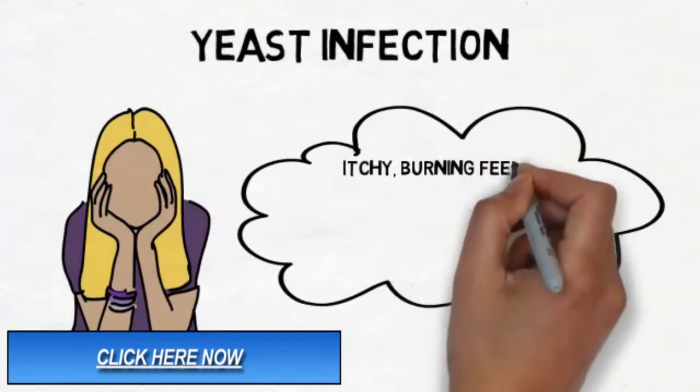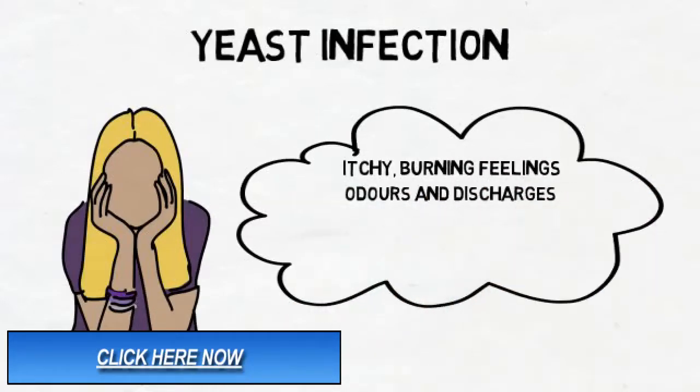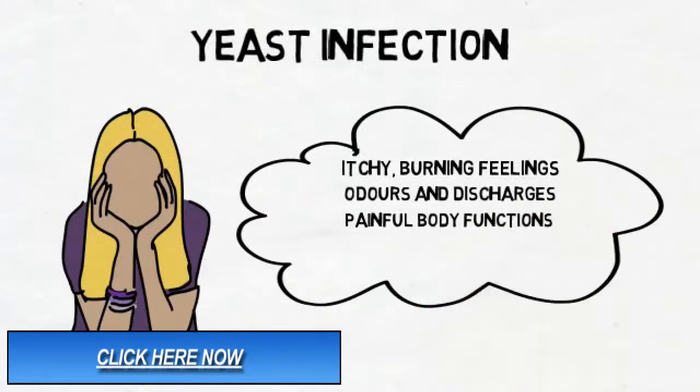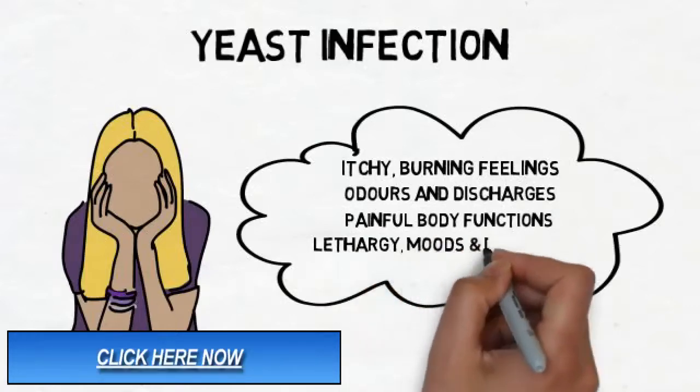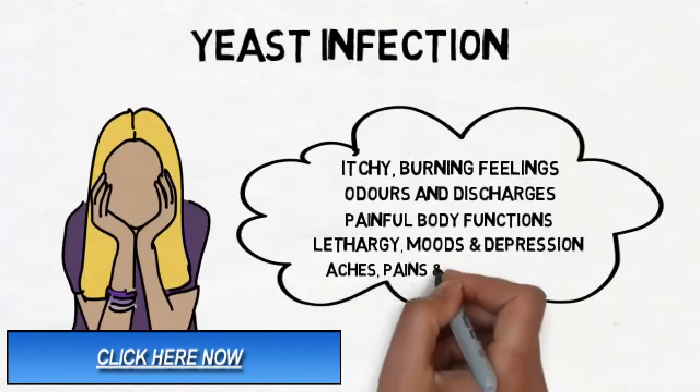An itchy, burning feeling in your intimate parts. Odors and discharges. Pain when passing urine or having intercourse. Lethargy. Swift mood changes or depression. Muscle aches, pains, and swollen joints.